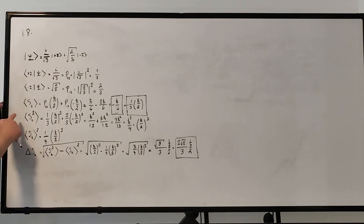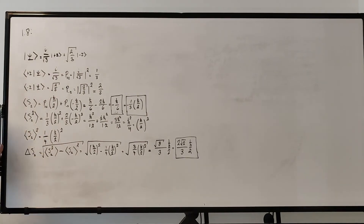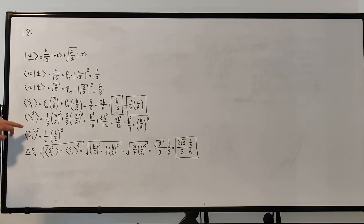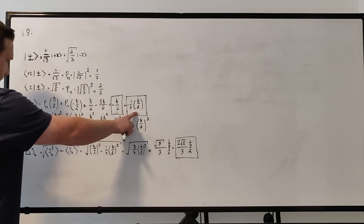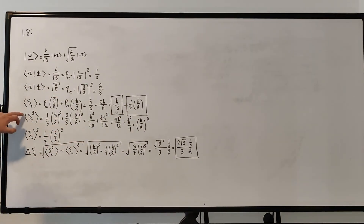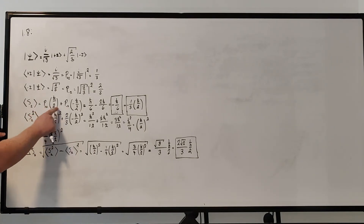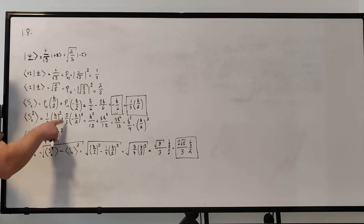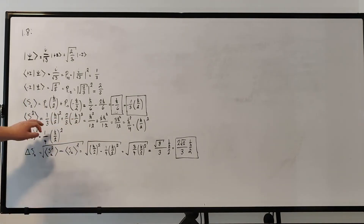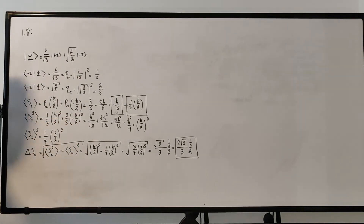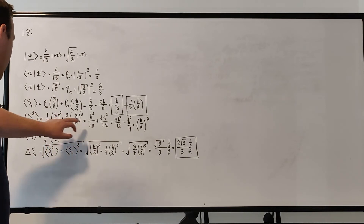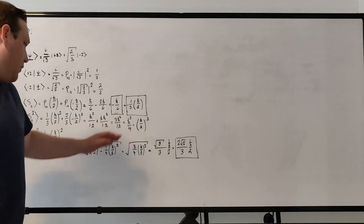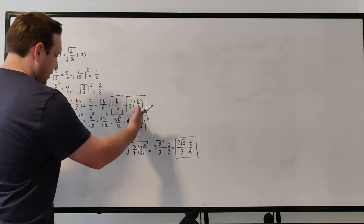Now if we want to measure the uncertainty, we need the expectation value of the spin component squared, and the square of the expectation value. We already have the latter — we just square the expectation value, giving (1/9)(ℏ/2)². To find ⟨Sz²⟩, we keep the probabilities the same but square the outcome values: one-third times (ℏ/2)² plus two-thirds times (−ℏ/2)². Doing the math, that's ℏ²/12 plus 2ℏ²/12, which equals 3ℏ²/12, or ℏ²/4 — equivalently (ℏ/2)².